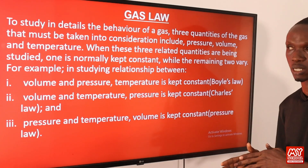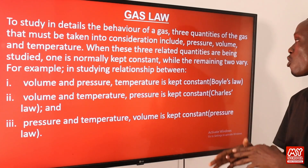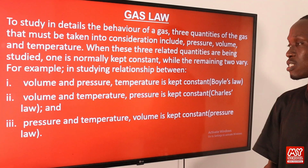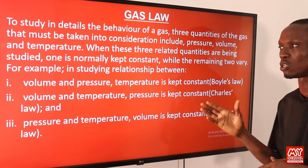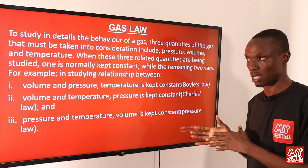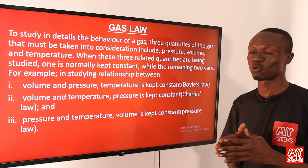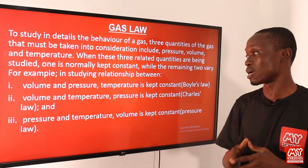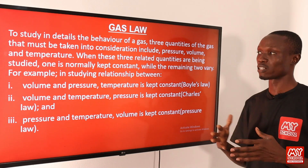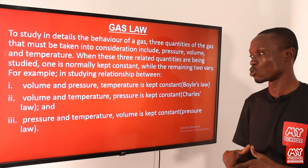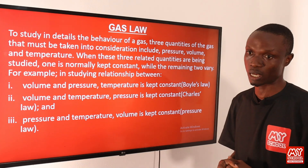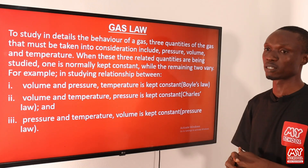When these three related quantities are being studied, one is normally kept constant while the remaining two vary. For example, in studying the relationship between volume and pressure, temperature is kept constant. In studying the relationship between volume and temperature, pressure is kept constant. And in studying the relationship between pressure and temperature, volume is kept constant.